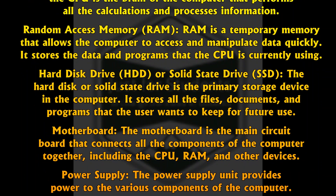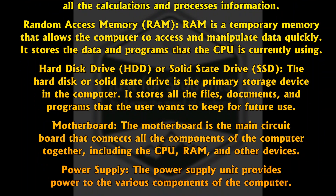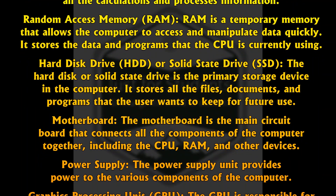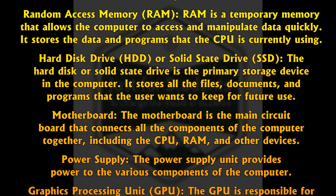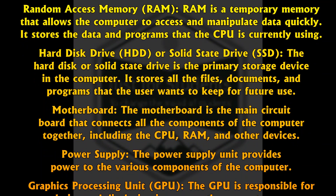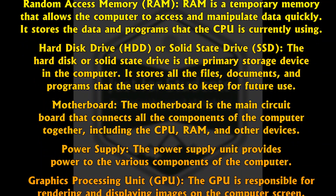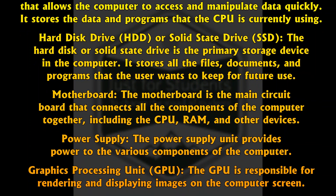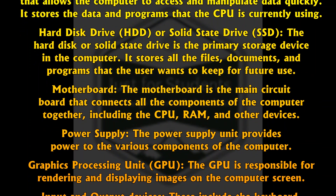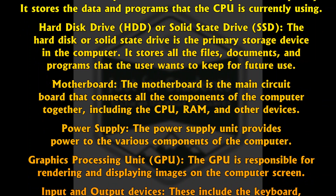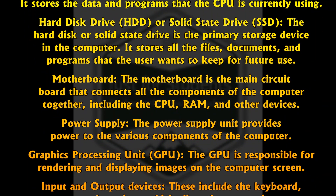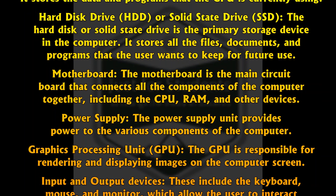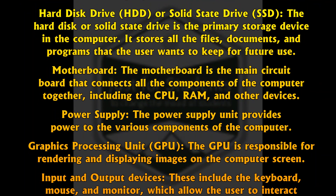Power Supply: the power supply unit provides power to the various components of the computer. Graphics Processing Unit (GPU): the GPU is responsible for rendering and displaying images on the computer screen. Input and output devices include the keyboard, mouse, and monitor, which allow the user to interact with the computer and receive feedback from it. Cooling System: the cooling system is responsible for keeping the components of the computer from overheating.